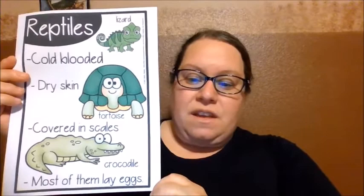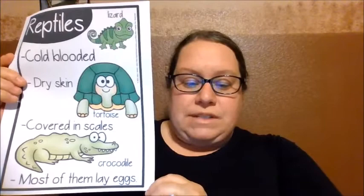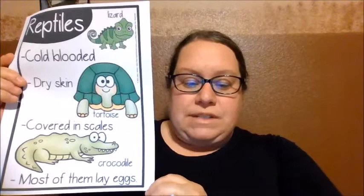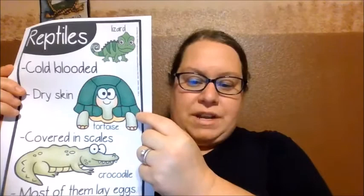Talking about animals, there are lots of groups of animals. I'm going to go over some of the groups with you. Some of these you might not realize are animals — like reptiles. Reptiles are cold-blooded animals. They have dry skin. They are covered in scales, and most of them lay eggs. Examples include a lizard, a tortoise, and a crocodile.